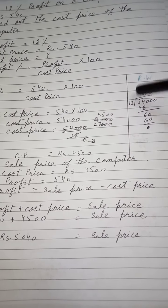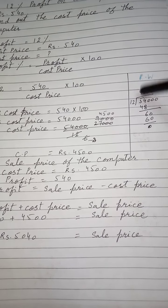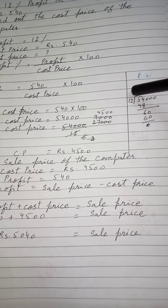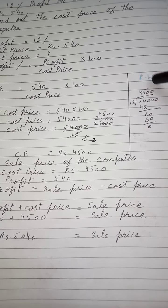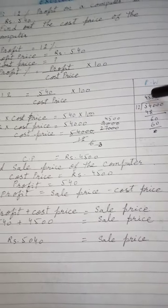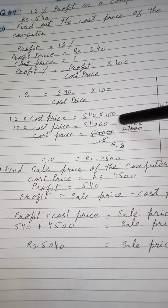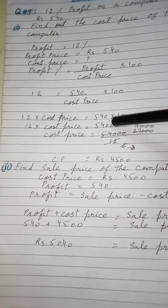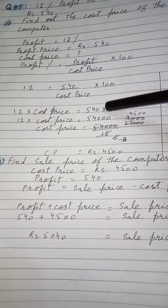Simply 54,000 کو 12 کے ساتھ divide کریں: 12 × 4 = 48، باقی 6، 60 میں 12 × 5 = 60، باقی 0۔ دونوں طریقوں سے cost price 4500 آ جائے گی۔ اب اس کا second part دیکھ لیتے ہیں: find the sale price of the computer۔